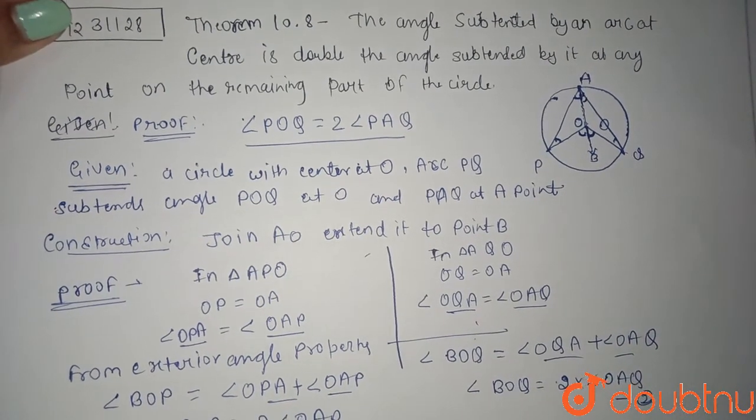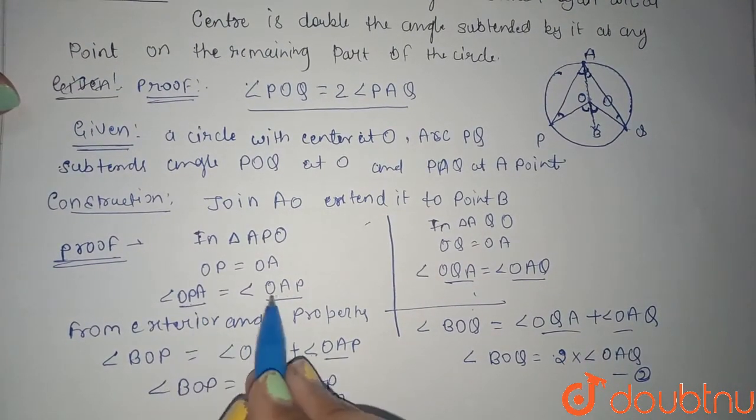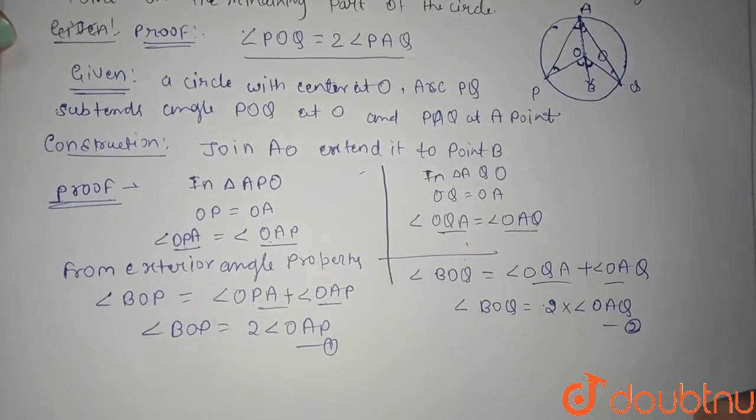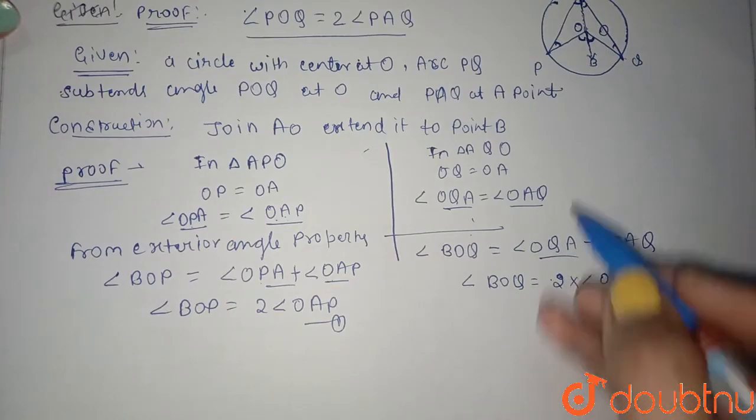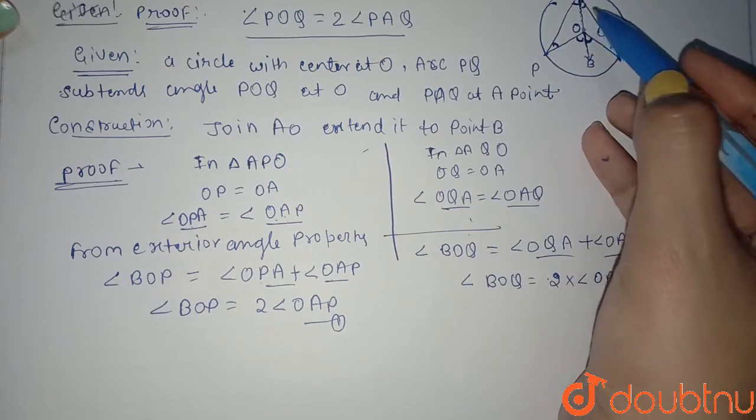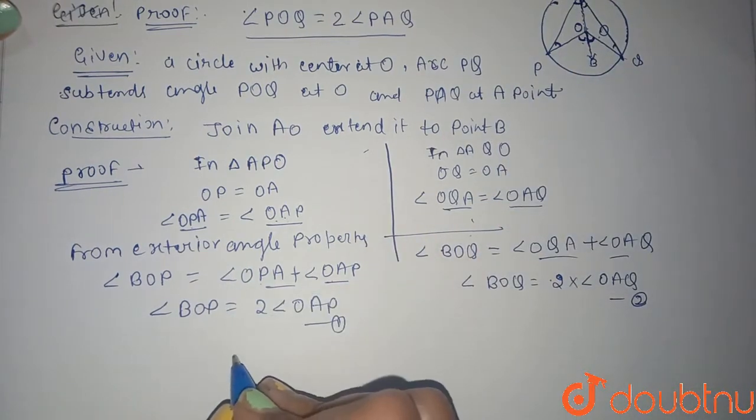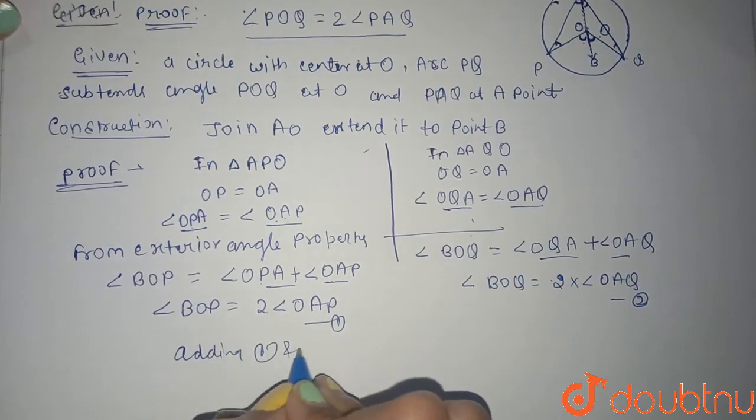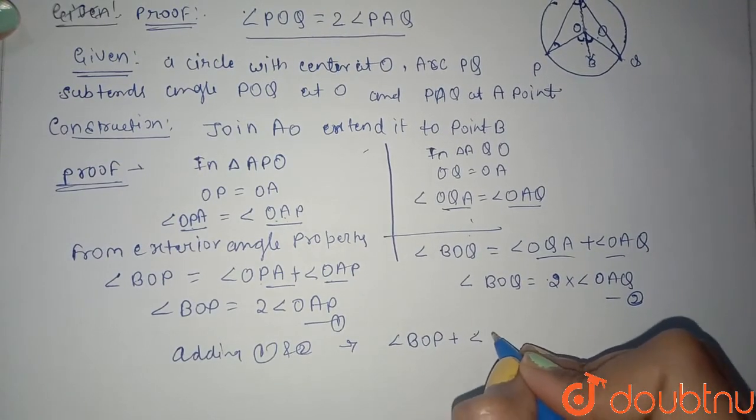Now this is the last part. If you will add these two equations, we get this whole angle and this whole angle and hence the relation between these two angles. So I'm adding equations 1 and 2.